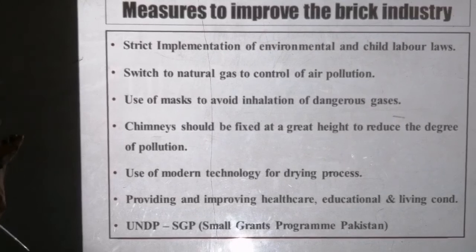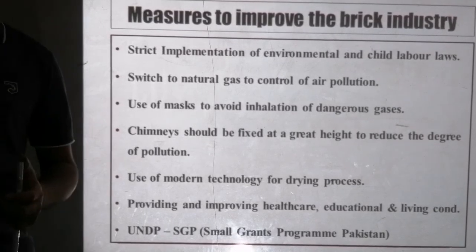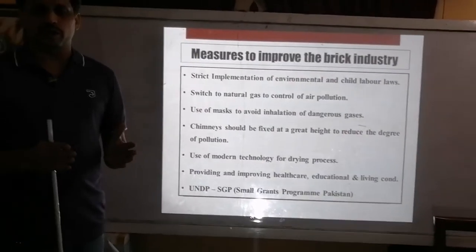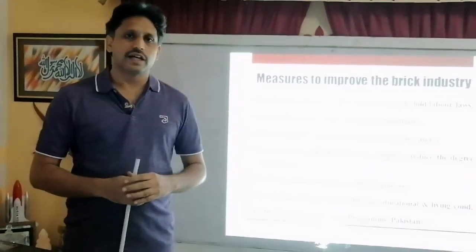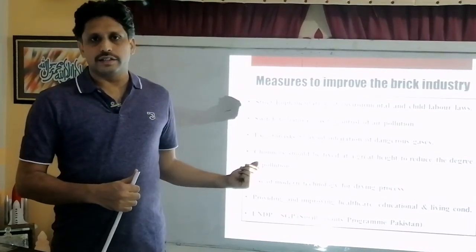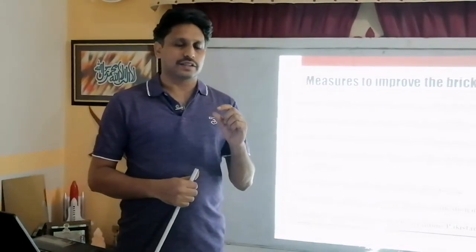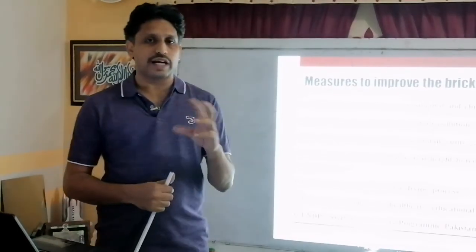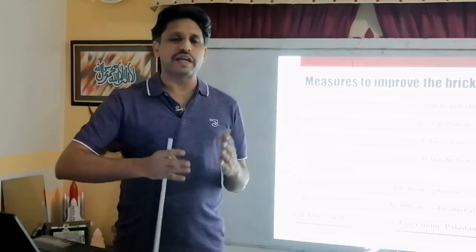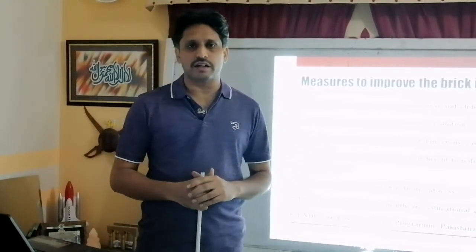Another solution is the use of modern technology for the drying process instead of drying bricks under sunlight, which will speed up production. Improving healthcare, educational, and living conditions by the government or kiln owners is also important. The UNDP's Small Grants Programme is providing assistance to Pakistani entrepreneurs to improve their kilns with new techniques that produce less air pollution and allow for more efficient use of fuel such as coal, reducing heat loss.